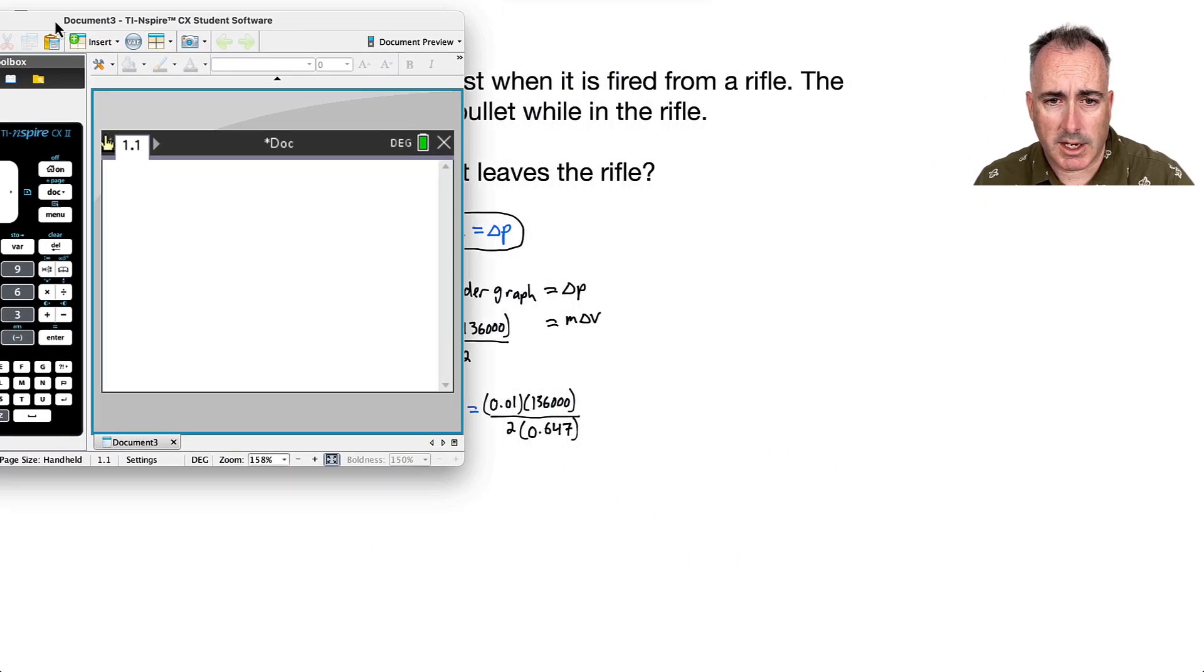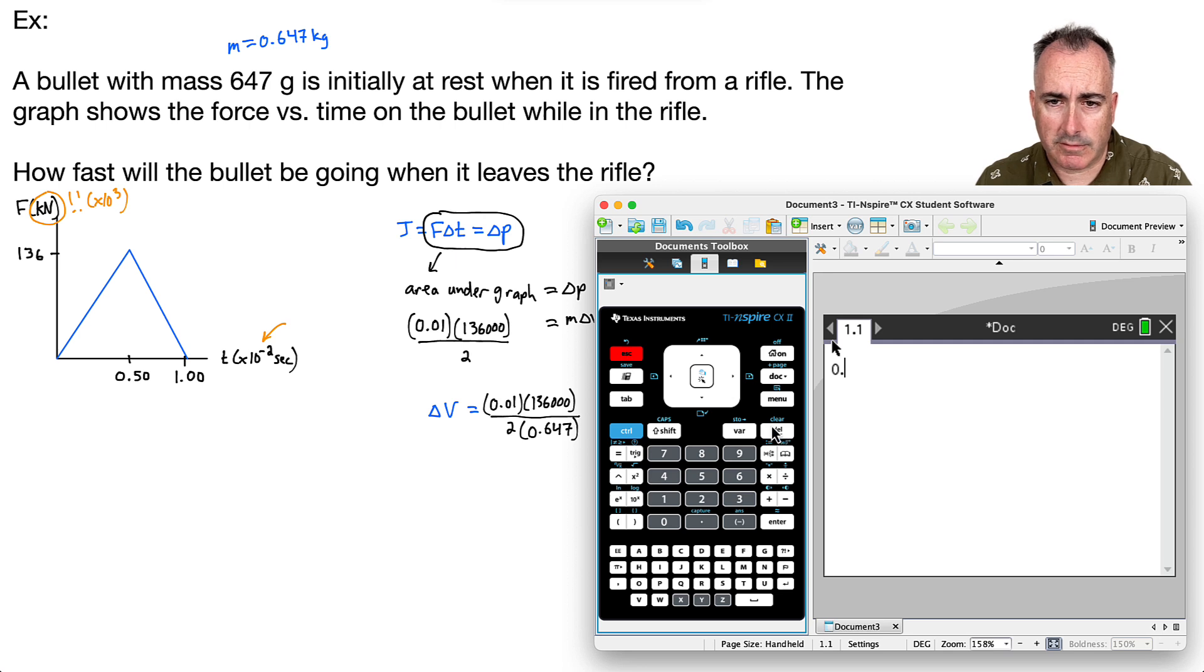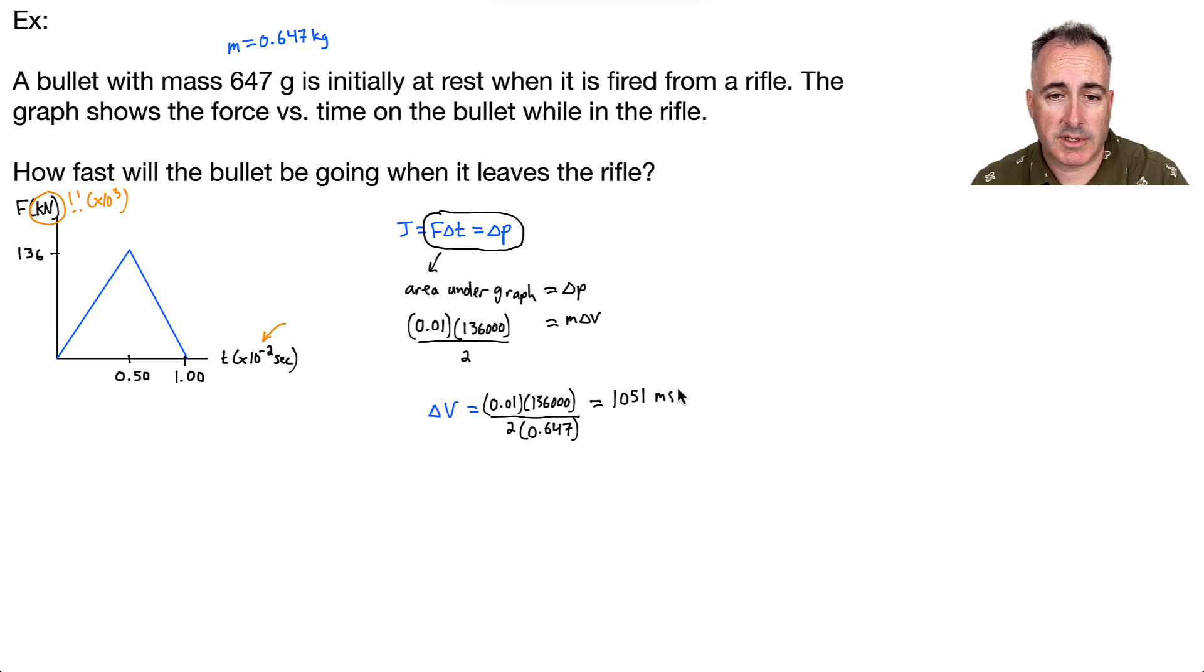I need a new calculator. There we go. I'll do a nice pretty fraction. So I want 0.01 times 136,000 and divide that by 2 times 0.647. I end up with the answer of 1051. Now that's going to be in meters per second. And like I said, this is delta V. But it started at rest, remember? So that means the final speed, when it leaves the rifle, will just be this same number. Let's do it to three significant figures. So I'll say 1,050. This will be my final speed in the rifle. That's its final speed right as it's exiting the rifle. So 1,050 meters per second is how fast it goes right when it leaves.